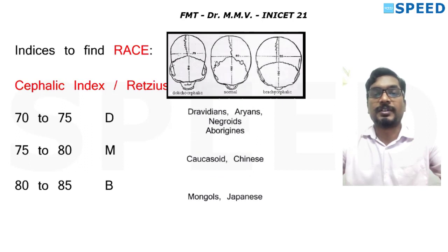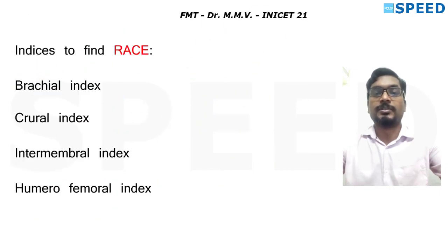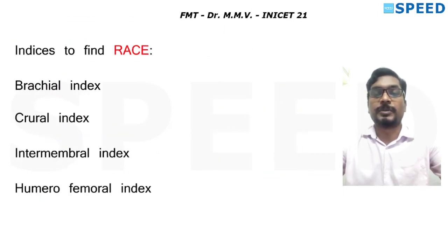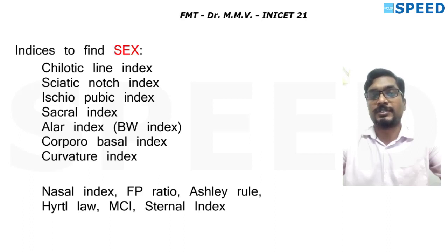We've seen cephalic index. For facial index, the numerator is nasion to gnathion and denominator is zygomatic distance. For limb indices: brachial index is the ratio of radius to humerus; crural index is tibia divided by femur; intermembral index is radius plus humerus divided by tibia plus femur; humerofemoral index is the ratio of humerus to femur. All have a multiplication factor of 100.